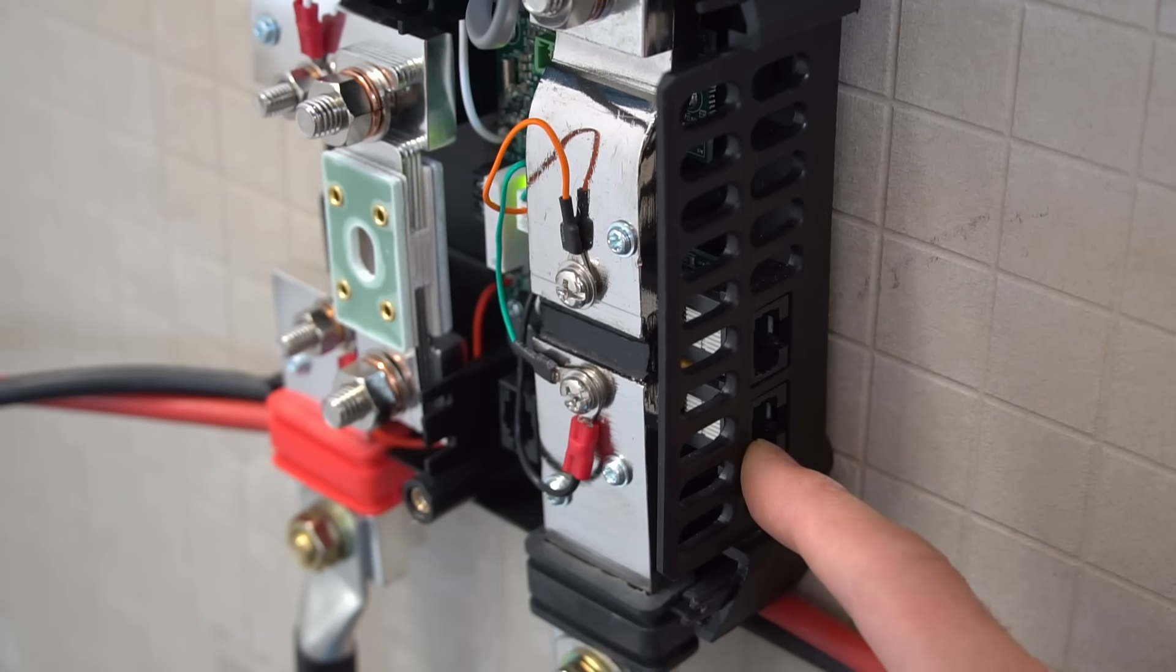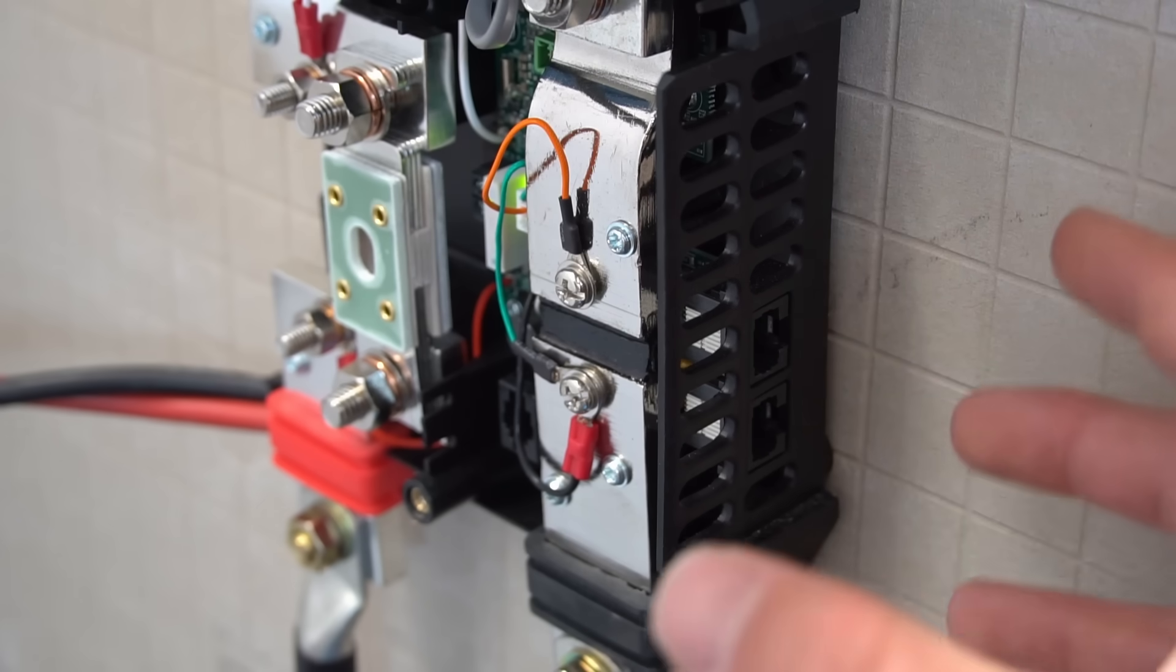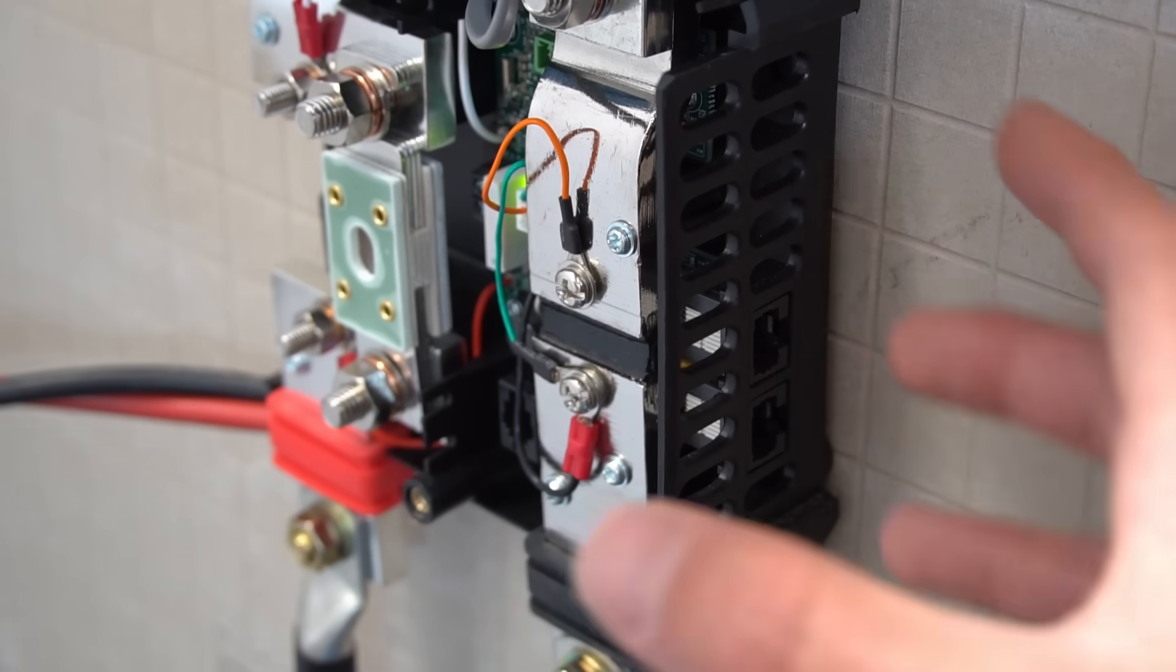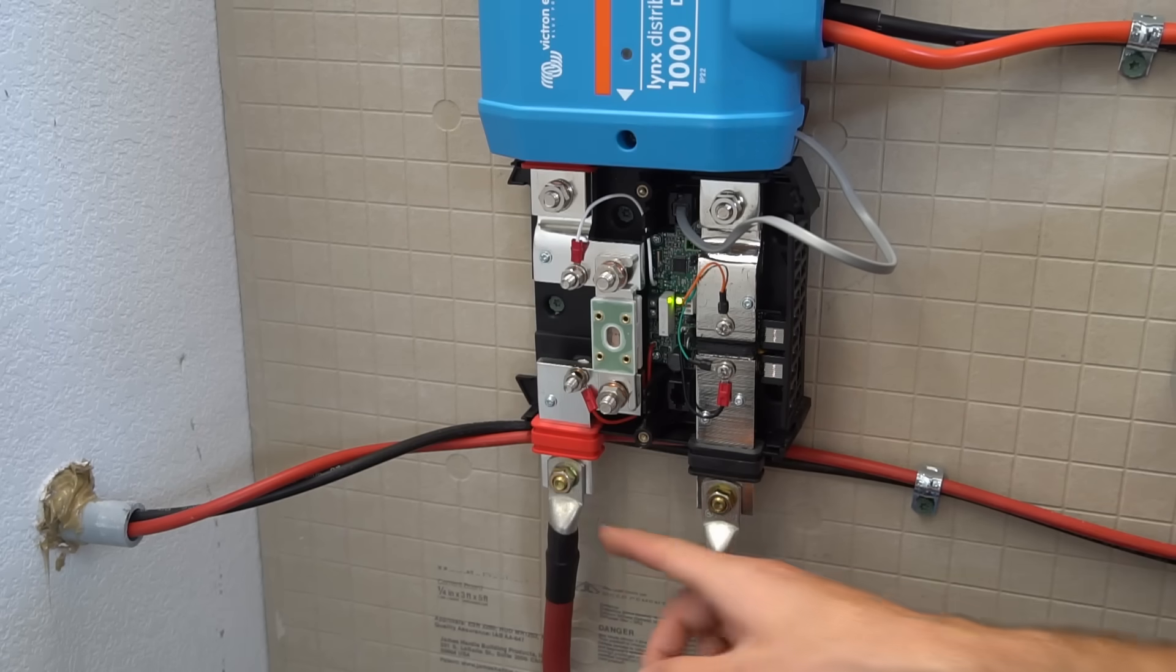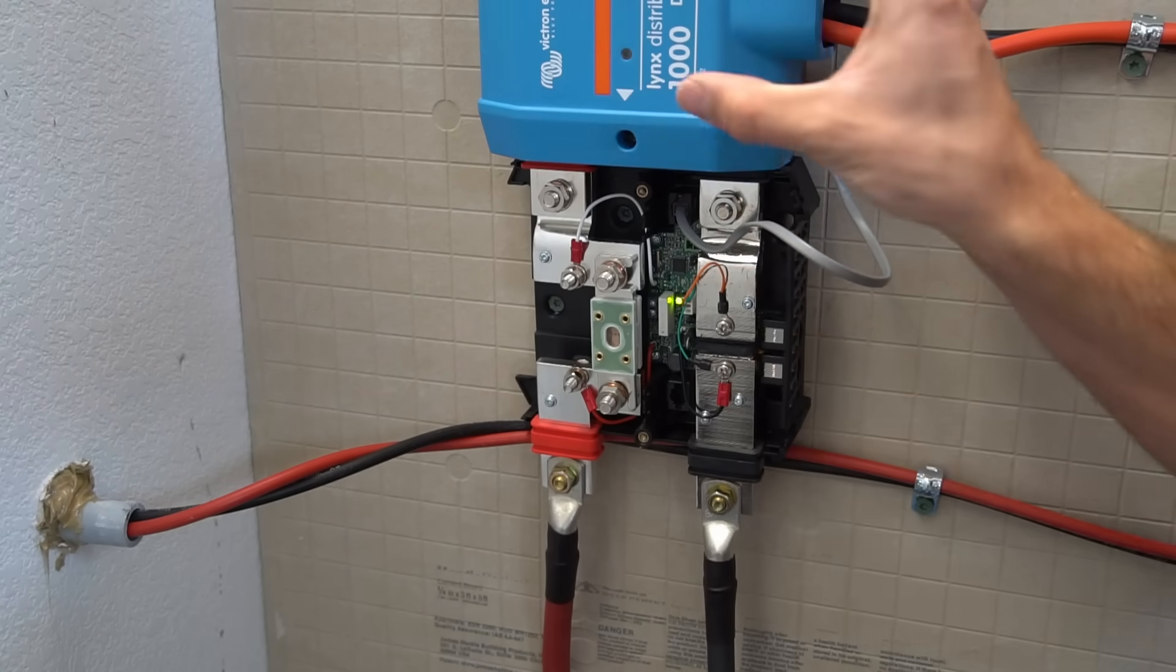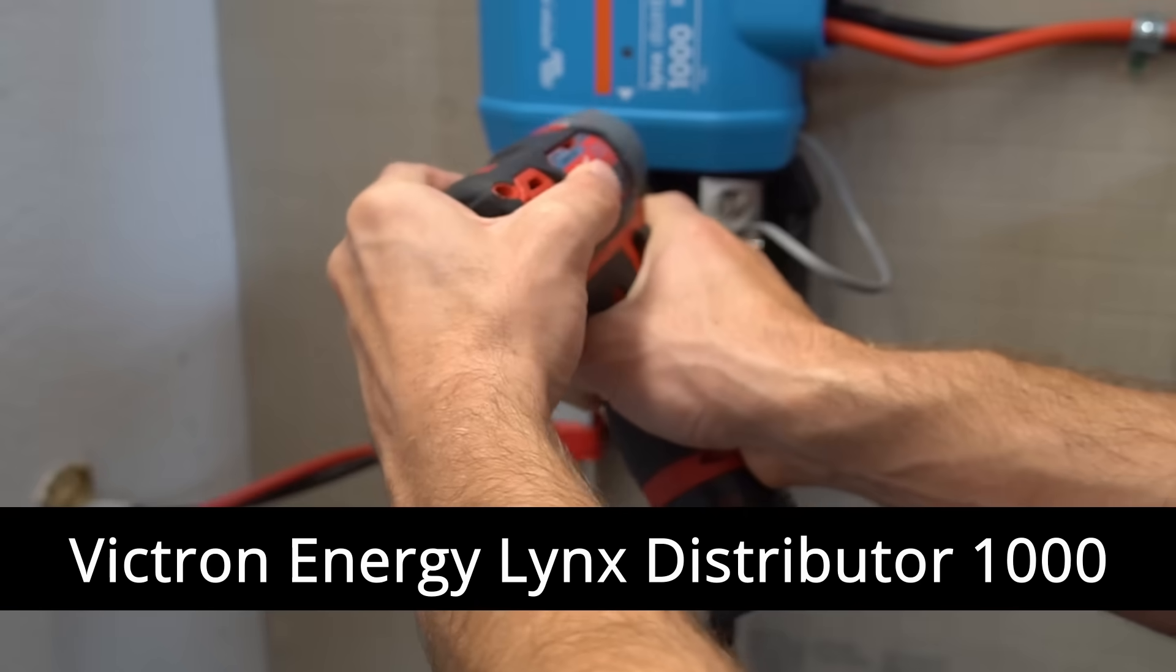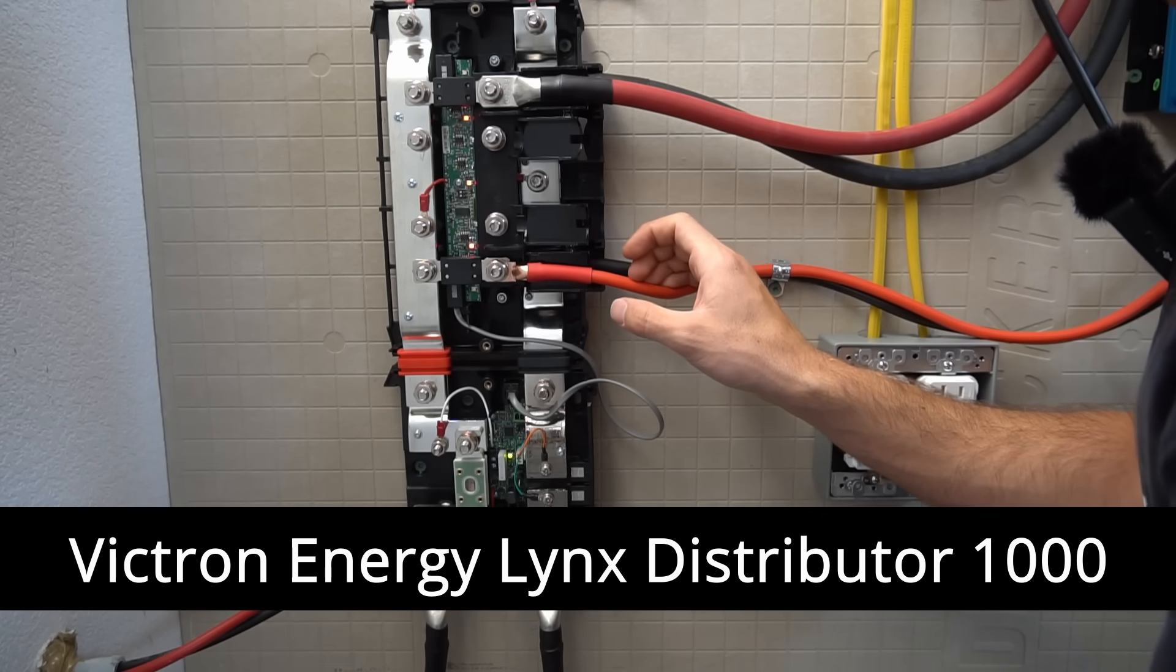Now on the side of the shunt we have a communication port and this is where you connect this shunt to the rest of the system so that this can talk to the other components. And this is a VE.can connection. So the battery bank connects down here and then you connect the other side of the shunt to the Lynx distributor.